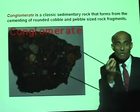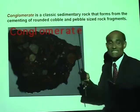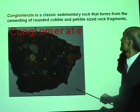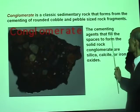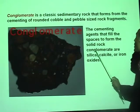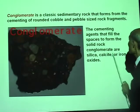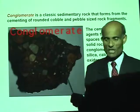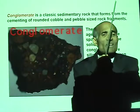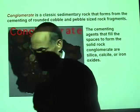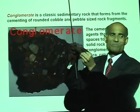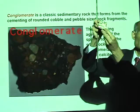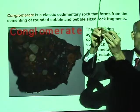Rounded pebbles and sand particles cemented together form a rock called conglomerate. The cementing agents that fill the spaces to form the solid rock are silica, calcite, or iron oxide. You can see they are very strongly joined — they cannot be taken apart. That's a conglomerate.